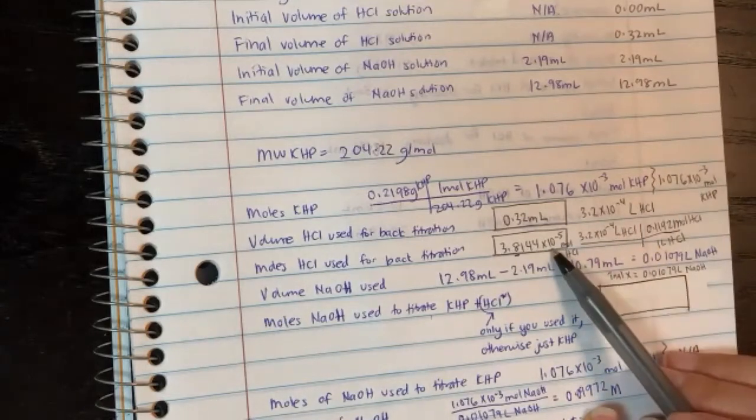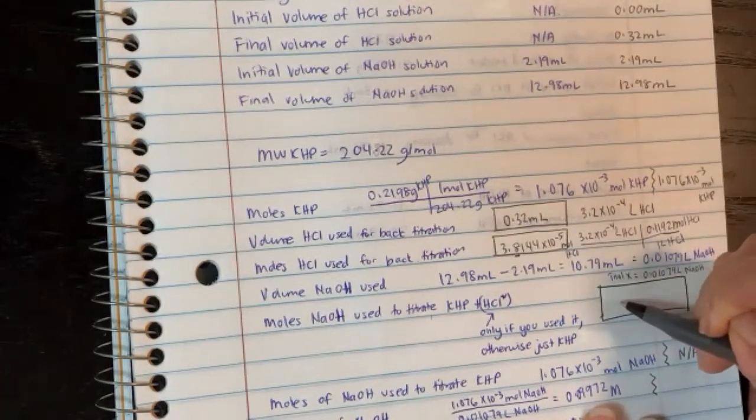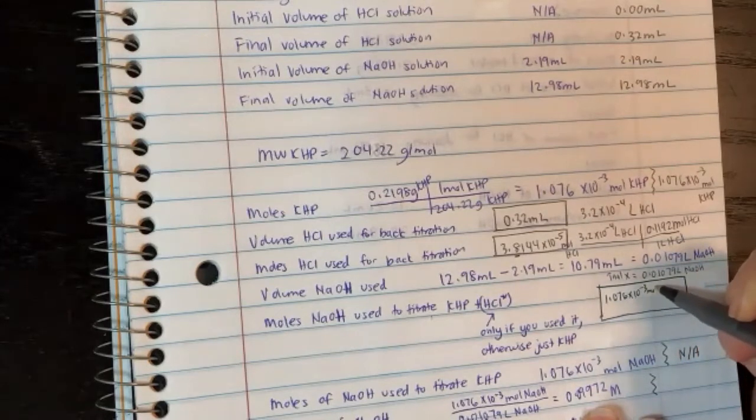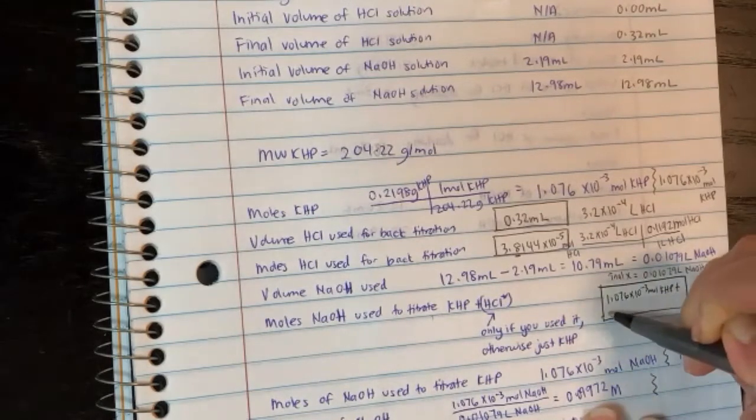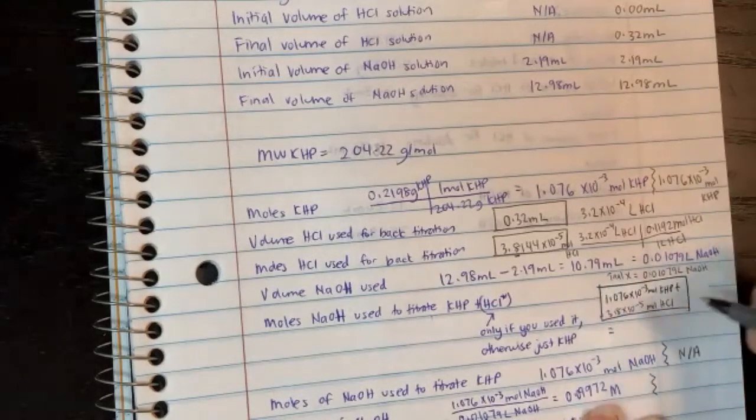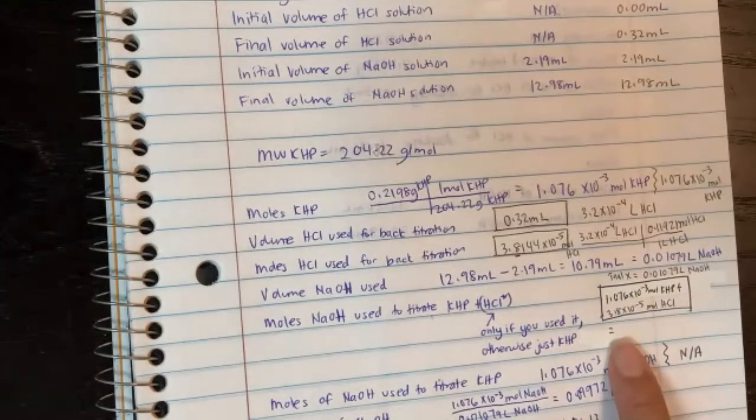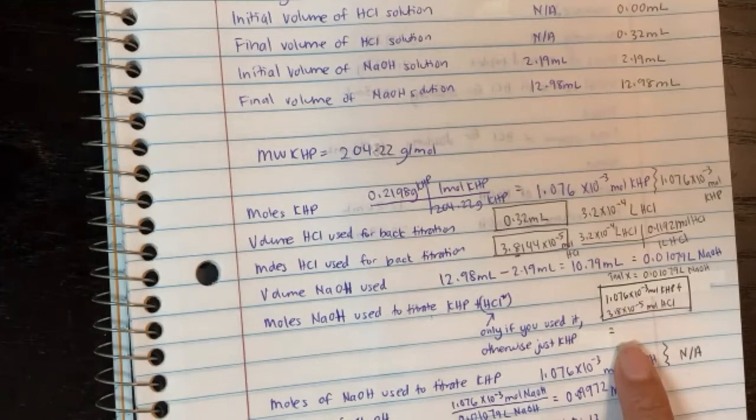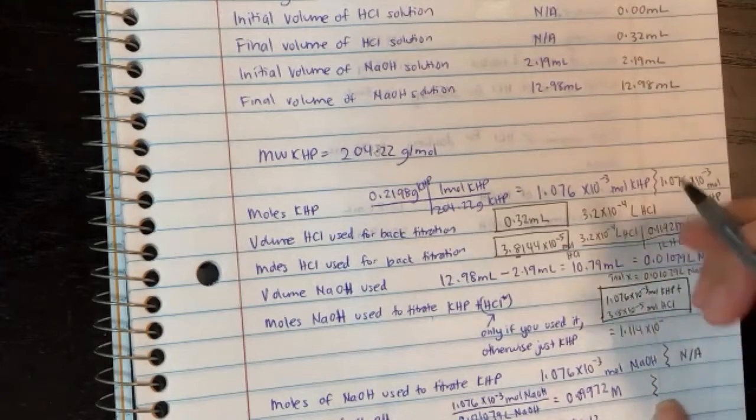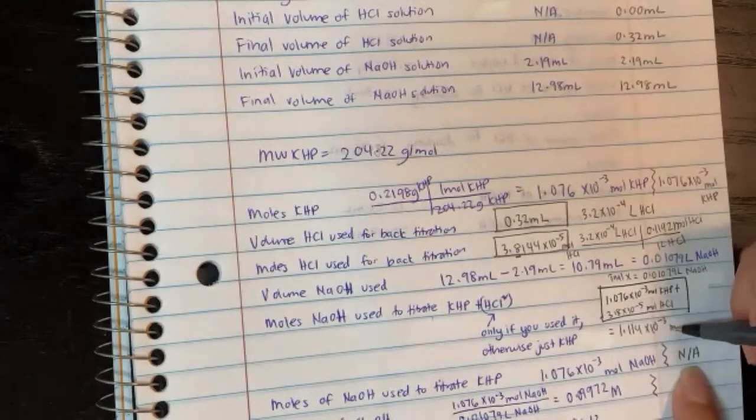So the moles of NaOH is equal to these two values added together, moles of KHP plus moles of HCl. So it would be 1.076 times 10 to the minus 3 moles of KHP plus 3.8 times 10 to the minus 5 moles of HCl. This will give you the moles of NaOH used during your titration. So let's go ahead and add that together. I get 1.114 times 10 to the minus 3 moles of NaOH.